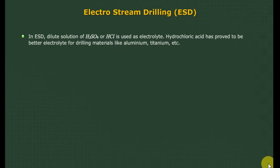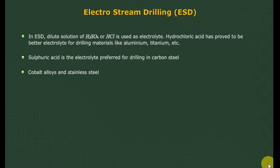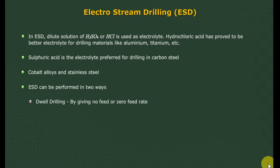In ESD, a dilute solution of sulphuric acid or hydrochloric acid is used as an electrolyte. Hydrochloric acid has proved to be a better electrolyte for drilling materials like aluminum, titanium, etc. Sulphuric acid is the electrolyte preferred for drilling carbon steel, cobalt alloys, and stainless steel. ESD can be performed in two ways: Dwell drilling — by giving no feed or zero feed rate; and Penetration drilling — by providing a finite feed to the nozzle.